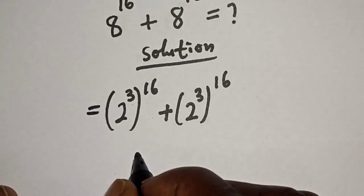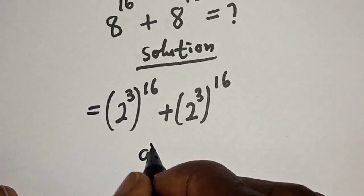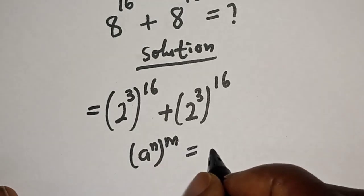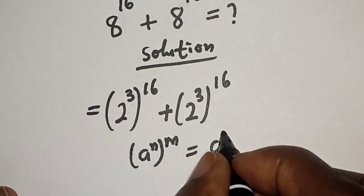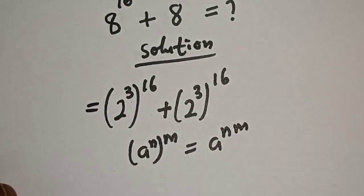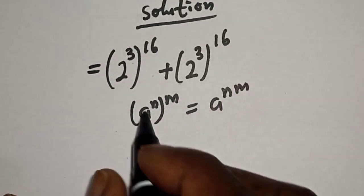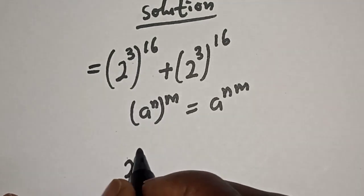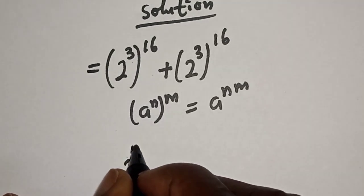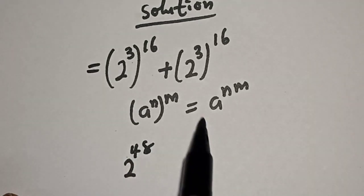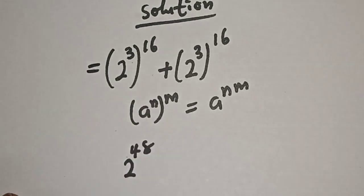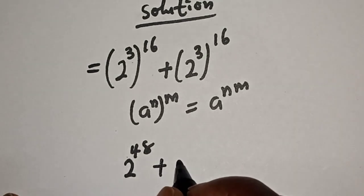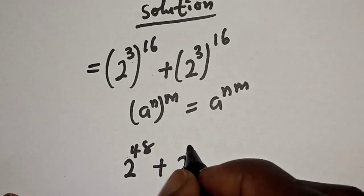Take note of this rule: a raised to power n, raised to power m, is equal to a raised to power n times m. So this becomes 2 raised to power 3 times 16, which is 48, plus 2 raised to power 48.